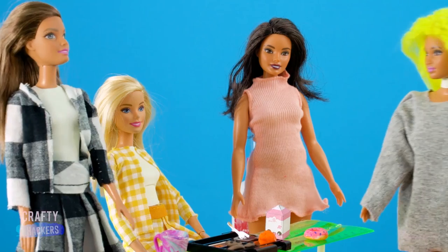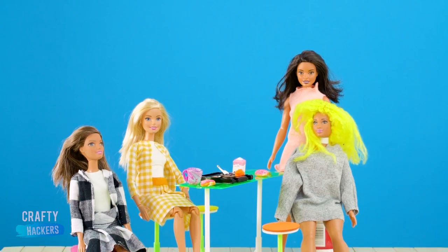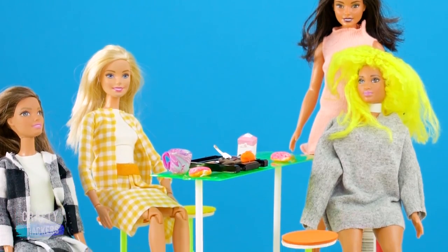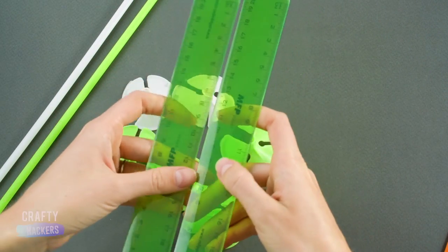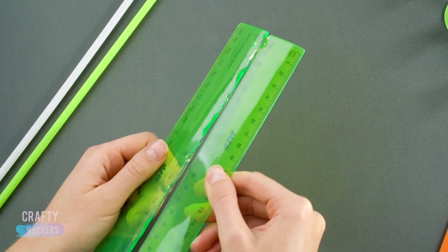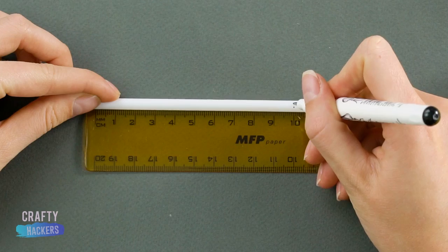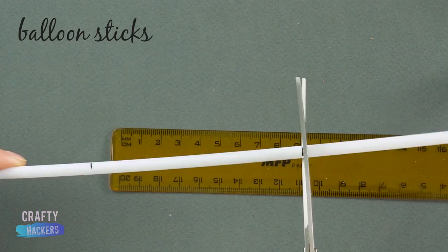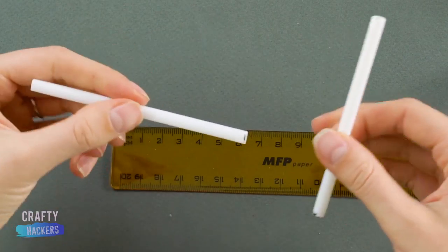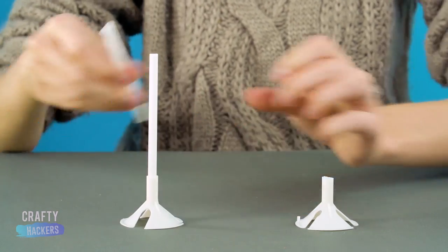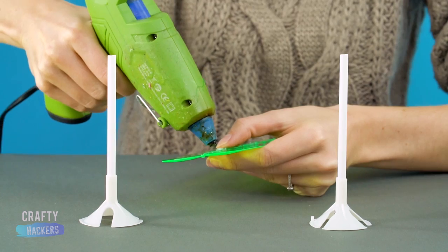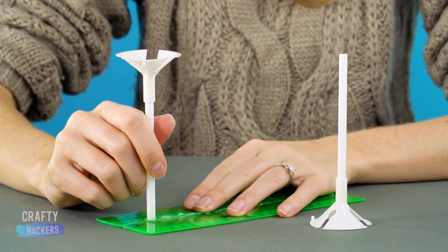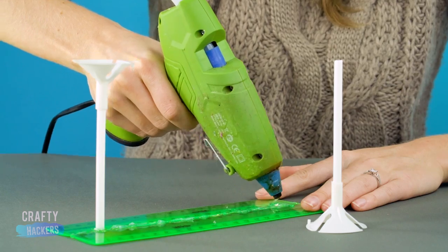Canteen! Let's make a common area for Barbie and her friends to eat lunch in. First, glue a couple of plastic rulers together, like this. Measure about 10 centimeters on a balloon stick and cut it at the marks. Actually, cut two! Now, place the sticks into those plastic balloon holders, like this. Glue the sticks to the bottom of the rulers to make a table.